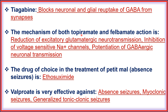The mechanism of both topiramate and felbamate action is: reduction of excitatory glutamatergic neurotransmission, inhibition of voltage-sensitive sodium channels, and potentiation of GABAergic neurotransmission. The drug of choice in the treatment of petit mal (absence) seizure is ethosuximide.